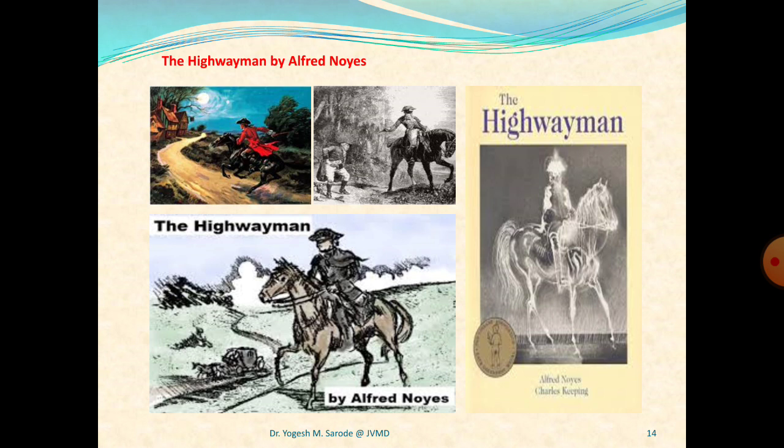Stanza two of part two: 'They said no word to the landlord — they drank his ale instead. For Bess could see, through her casement, the road that he would ride.' The men do not talk to the landlord but drink his ale. They gagged his daughter and bound her to the narrow bed. These are the villains of the story, men who are certainly going to interfere with the happy relationship that played out in the previous stanzas.